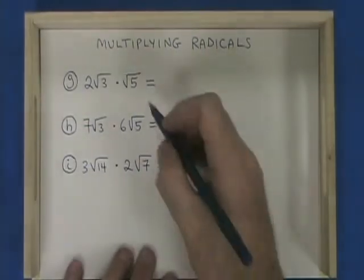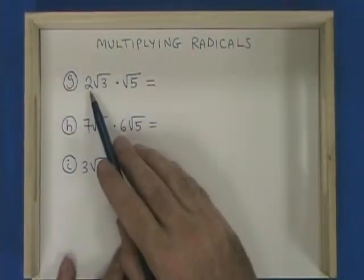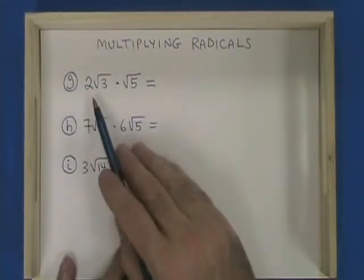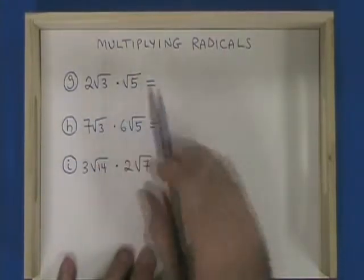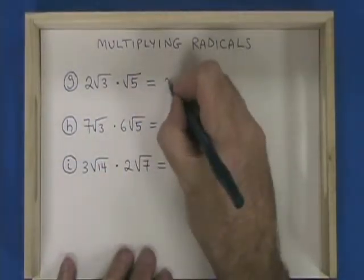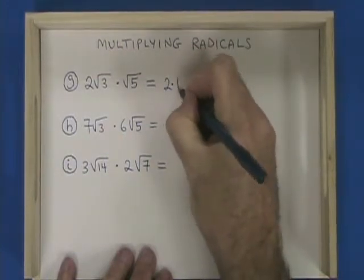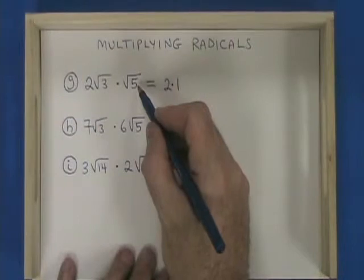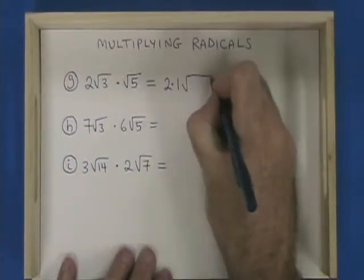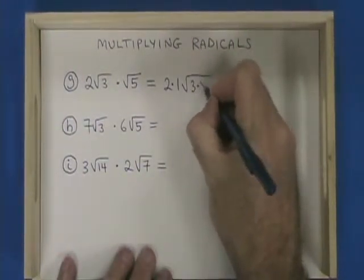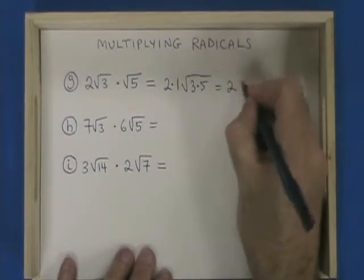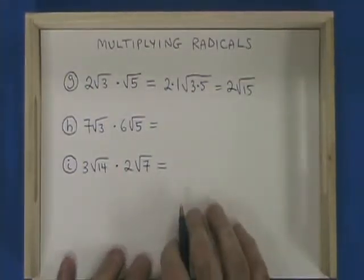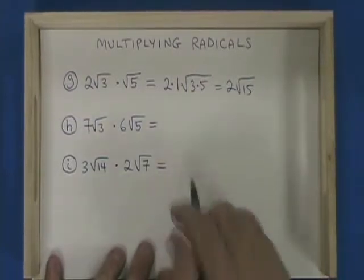In example g, I have a numerical coefficient before the radical. What you do here is multiply the numerical coefficients: 2 times 1 equals 2. And you multiply the contents of the radicals separately, giving 2 times 1, radical 3 times 5. That's 2 radical 15. This cannot be simplified further, so that one's finished.